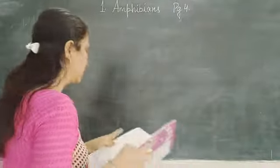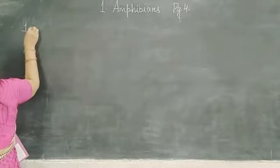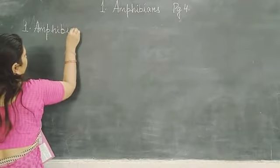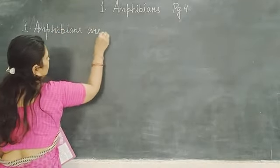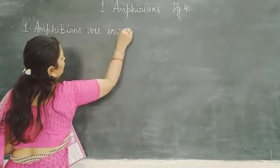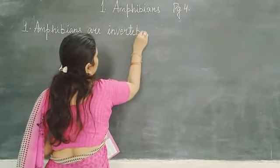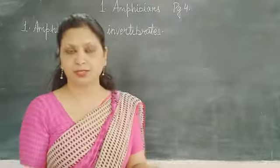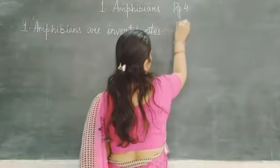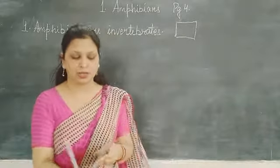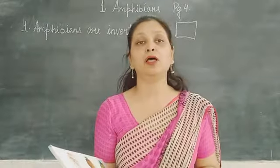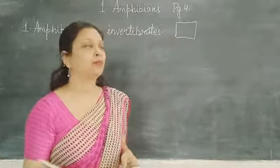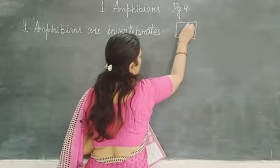The first point is: amphibians are invertebrate. Do you know that amphibians are invertebrate? Invertebrate means the animals that lack a backbone. Amphibians actually have a backbone — they are vertebrate. So this statement is wrong.